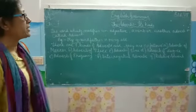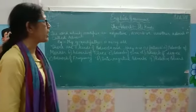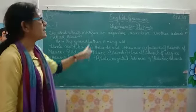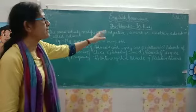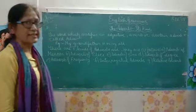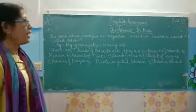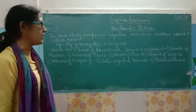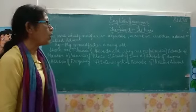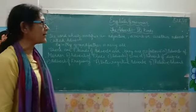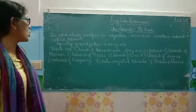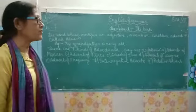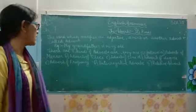Hello students, today we will continue with English grammar, chapter number 7, the title of which is the adverb and its kinds. An adverb — the word which modifies an adjective, a verb, or another adverb — is called an adverb. Example: my grandfather is very old.